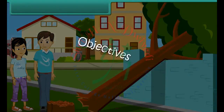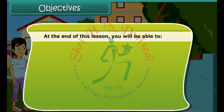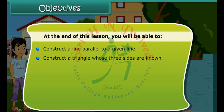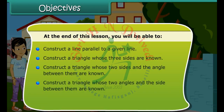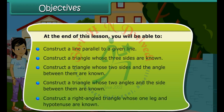Objectives. At the end of this lesson, you'll be able to: construct a line parallel to a given line; construct a triangle whose three sides are known; construct a triangle whose two sides and the angle between them are known; construct a triangle whose two angles and the side between them are known; and construct a right angled triangle whose one leg and hypotenuse are known.